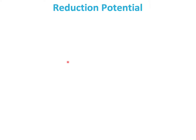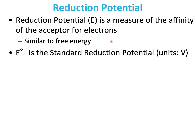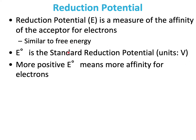Now let us understand what reduction potential is. Reduction potential E is a measure of the affinity of the acceptor for electrons. This is similar to free energy. E0 is the standard reduction potential, and the units for this is volts. A more positive E0 means more affinity for electrons.